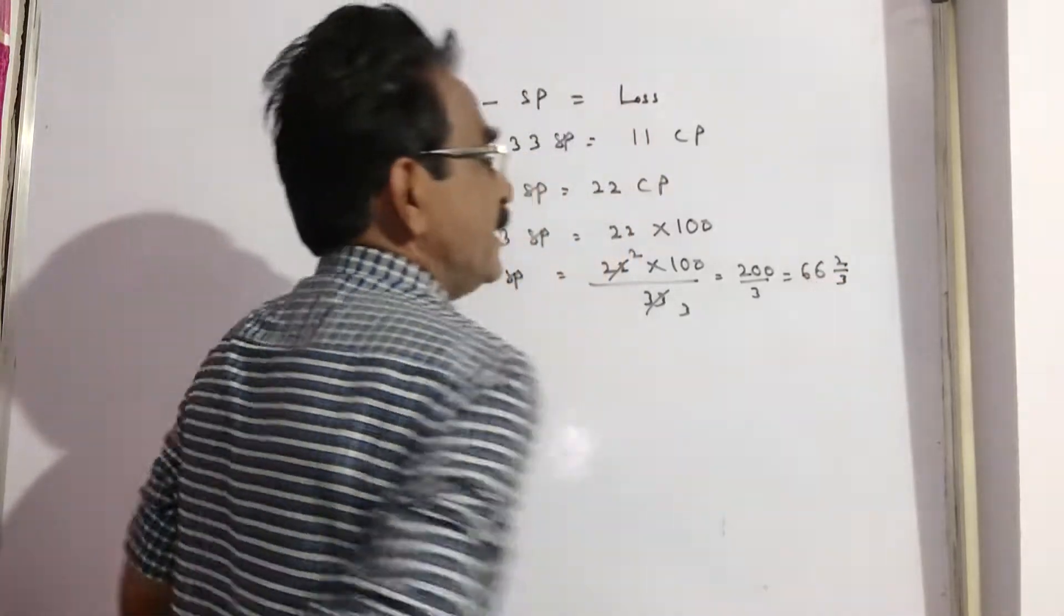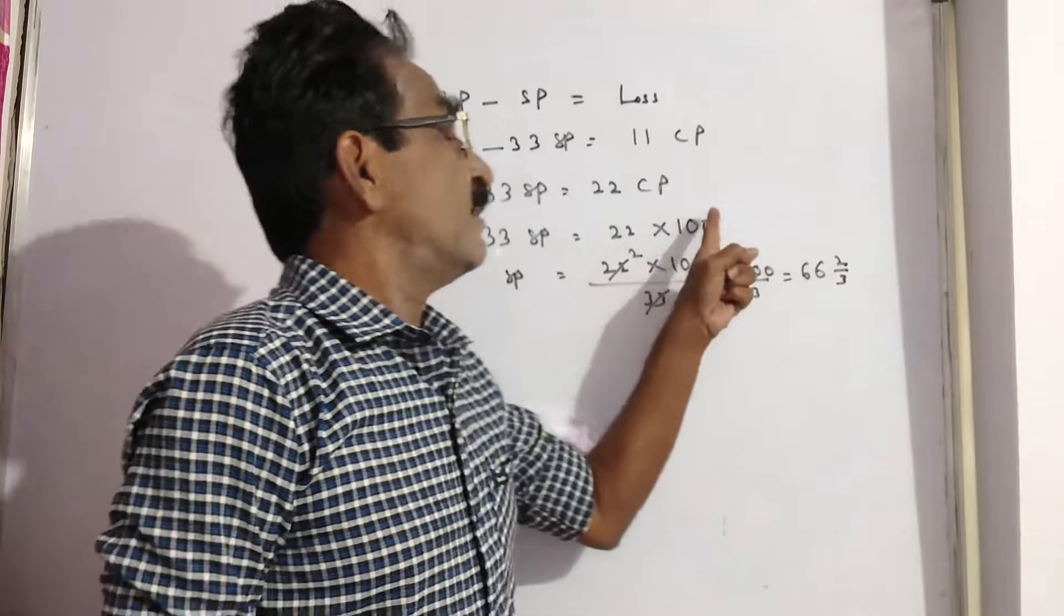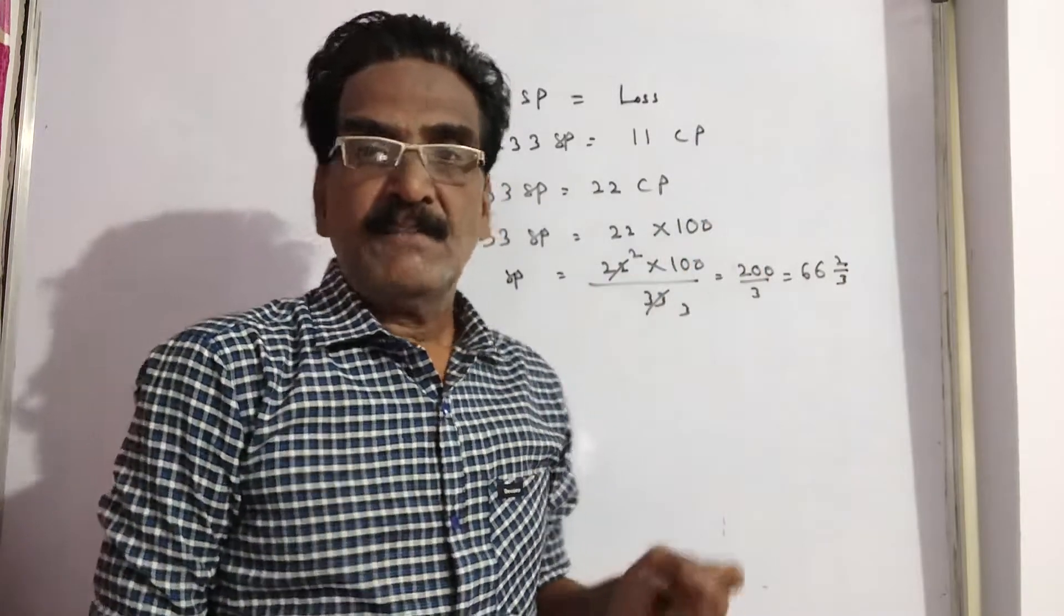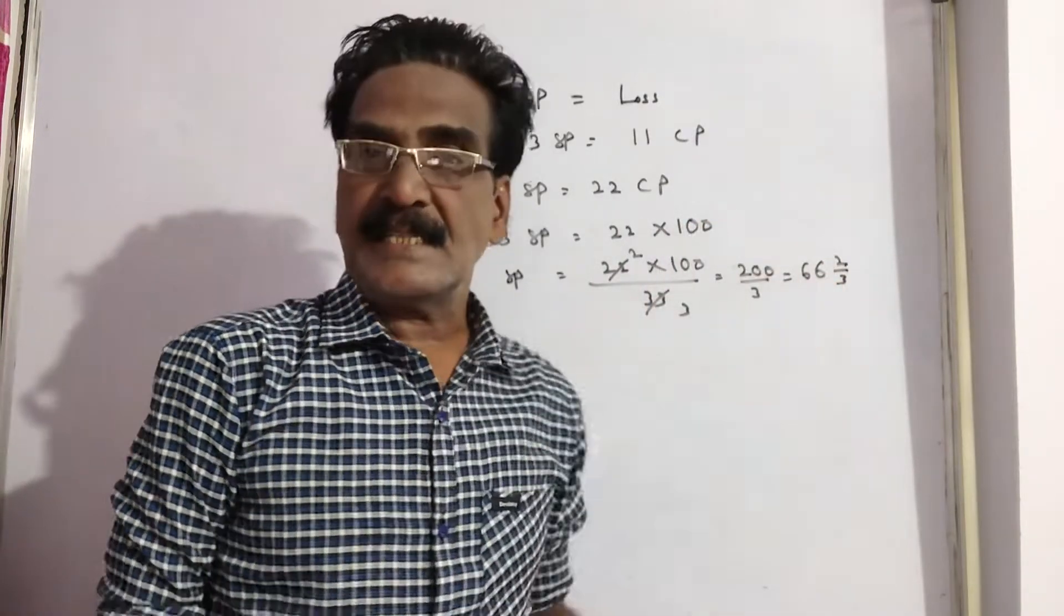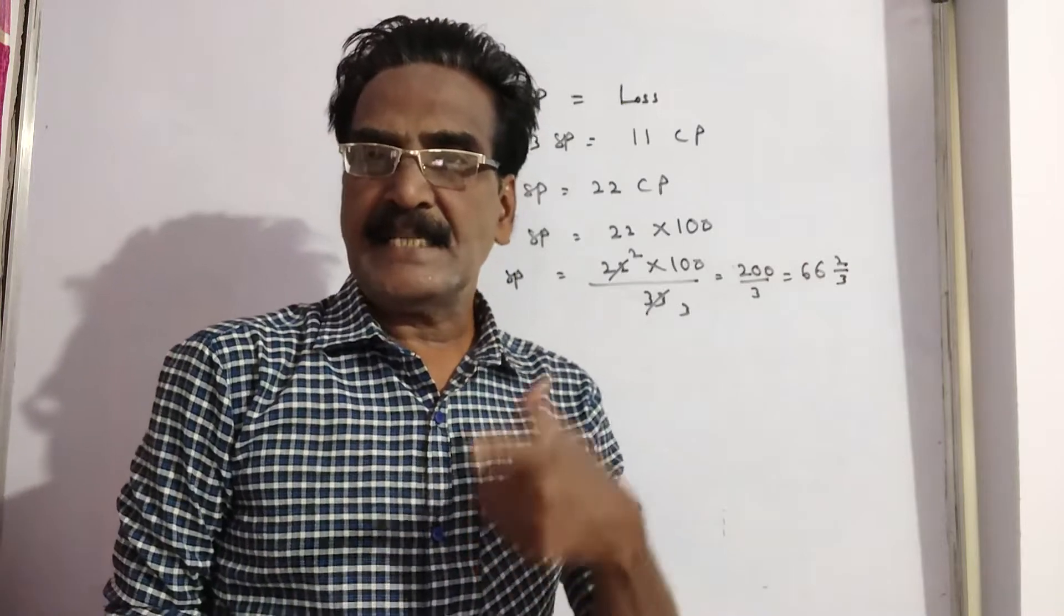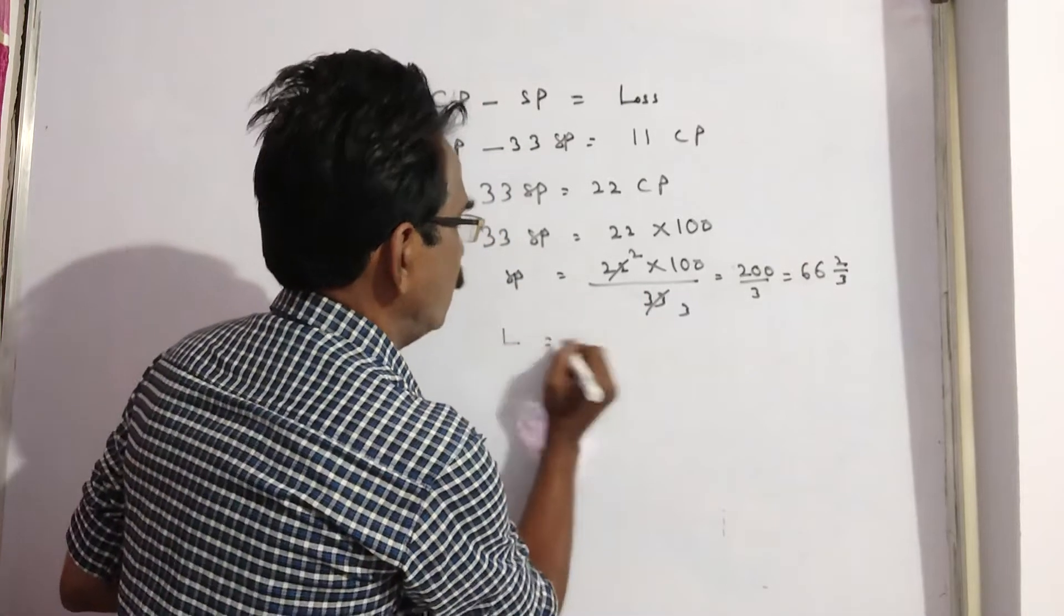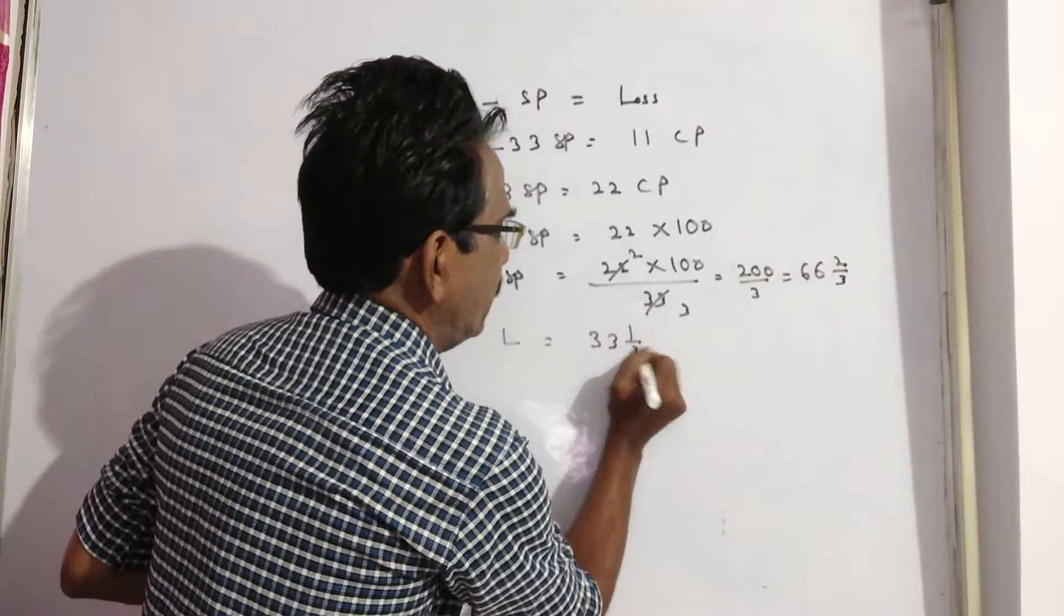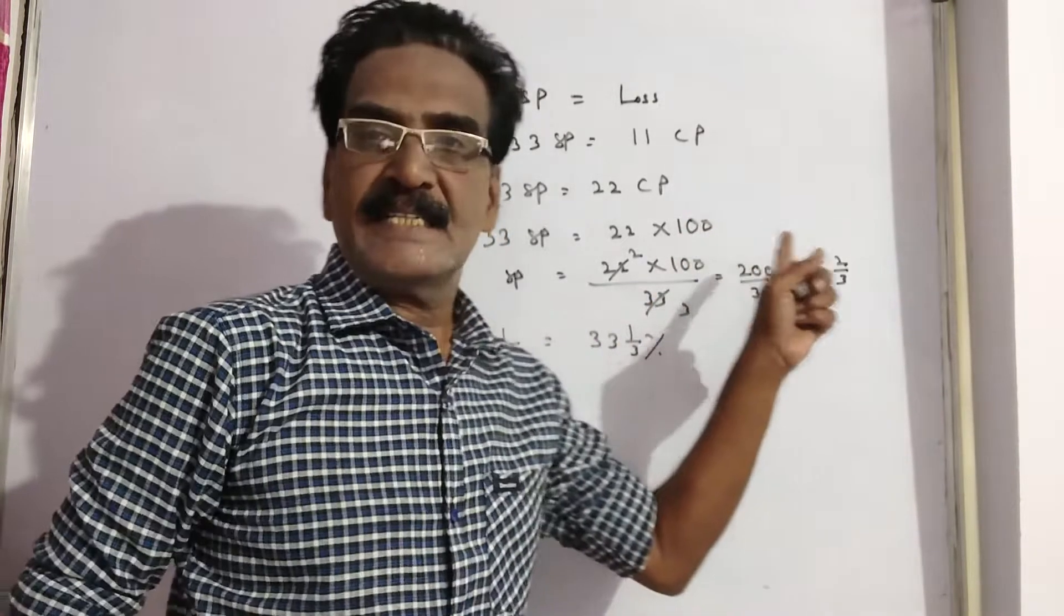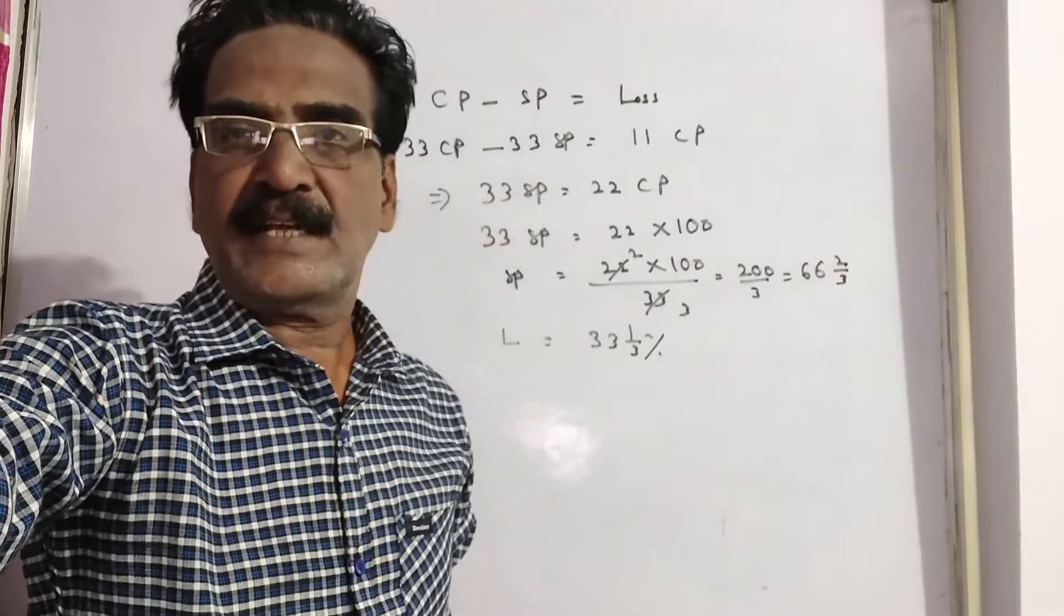See friends, when cost price is 100, selling price is 66 and 2 by 3. That means 33 and 1 by 3 percent loss. Loss equals 33 and 1 by 3 percent, which is 100 minus 66 and 2 by 3. Okay friends, thank you.